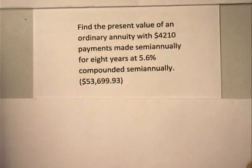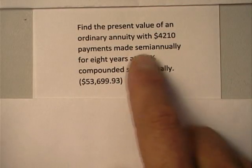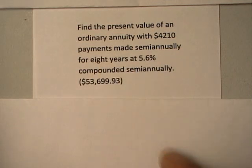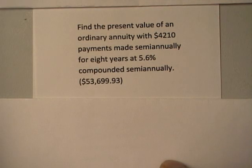You can use the TVM solver to find the present value of an ordinary annuity with $4210 payments made semiannually for eight years.